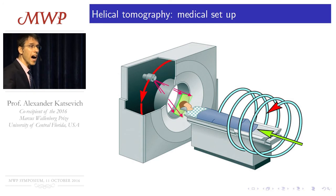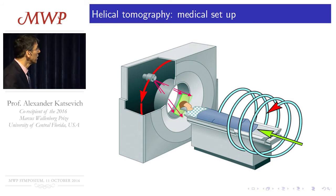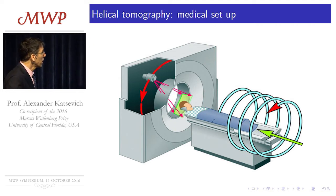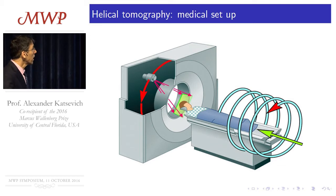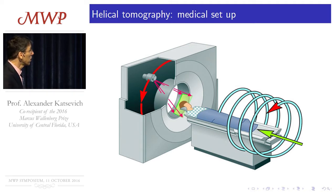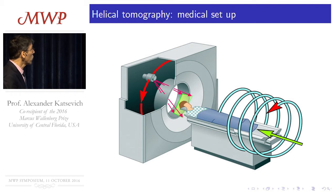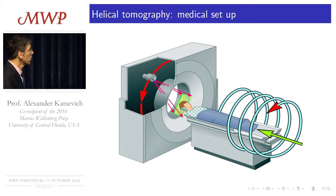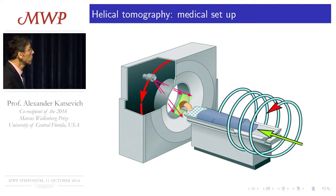Helical tomography is one of the most common ways of scanning objects and collecting tomographic data — this is the field where I started my work on CT. The patient lies on the table, and this device is called a gantry. Inside the gantry there is an X-ray source and a detector array consisting of a bunch of little detector pixels. The source-detector pair rotate, and the source sends X-rays through the patient which are then detected by the detector. The patient is moved into the gantry, so relative to the patient, the trajectory of the source is a helix — that's why we call it helical CT.